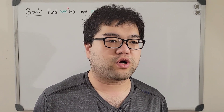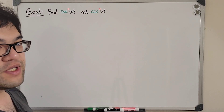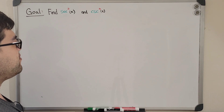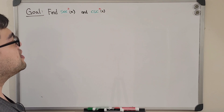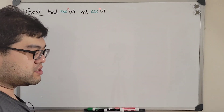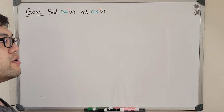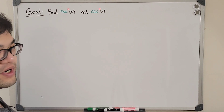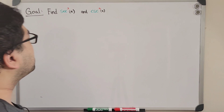Welcome back. Continuing from the last video, this time we're going to find the last two expressions: secant squared of x and cosecant squared of x. Hopefully we can rewrite these two quadratic trigonometric functions in terms of just linear trigonometric functions — ideally secant squared in terms of secant only, and cosecant squared in terms of cosecant only. If that's not possible we'll use other trig functions, but we still want no squares in our final expressions. Here we go.